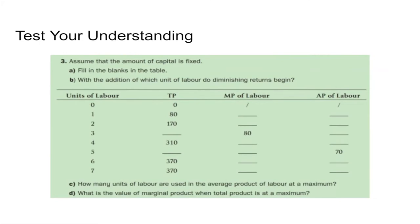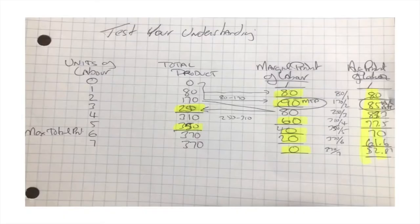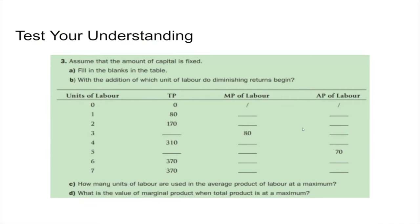Here we have a worked example of marginal product — fill in the blanks. We've got our units of labor and total product. One worker produces 80, two workers 170, and the third is an unknown amount. If we have one value or the other, we can figure out the missing one. For one unit of labor producing 80 products, marginal product can't be calculated at the first row. But the average is 80 divided by one.